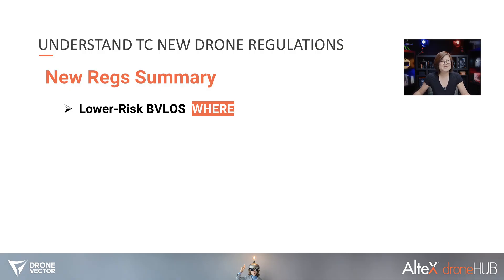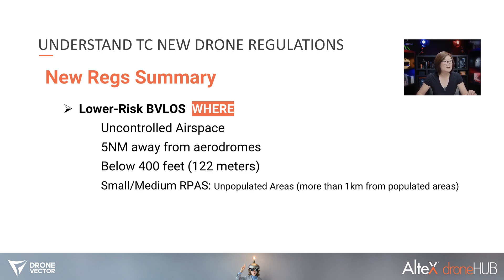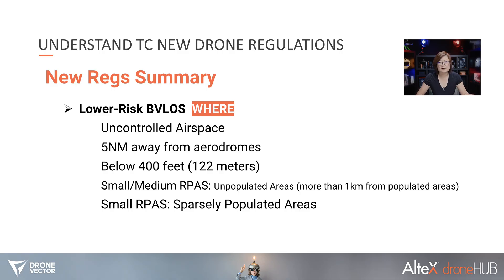Moving to lower risk BVLOS operations. Let's talk about the location specific to lower risk BVLOS. We need to operate in uncontrolled airspace, five nautical miles away from aerodromes, under 400 feet or 122 meters. For small and medium RPOC operations in unpopulated areas more than one kilometer away from populated areas. For small drones, we can also operate in sparsely populated areas, which is more than five but less than 25 people per square kilometer.